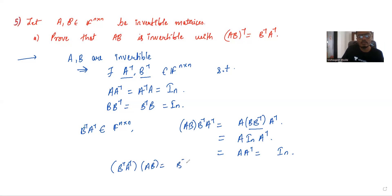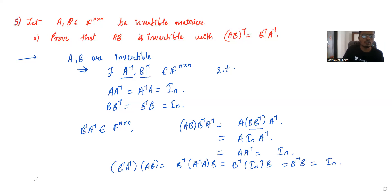Similarly, B inverse A inverse times AB is the same as B inverse times A inverse times A times B. A inverse times A is the identity, so this becomes B inverse times B, which is also the identity matrix.